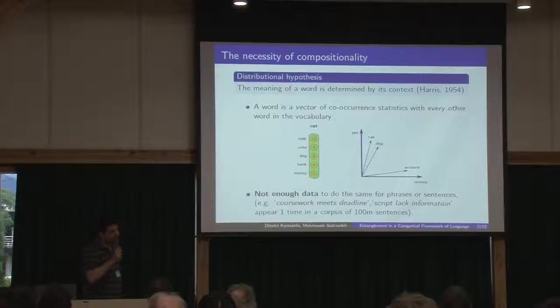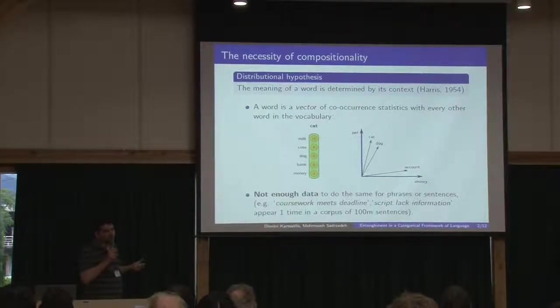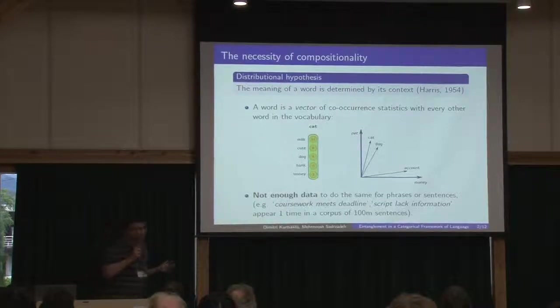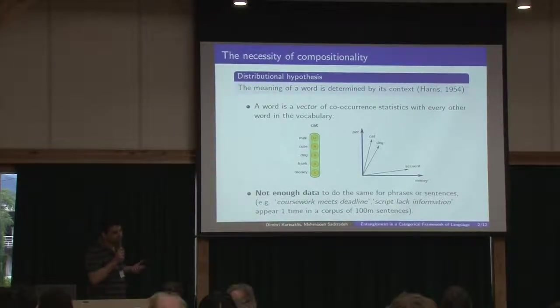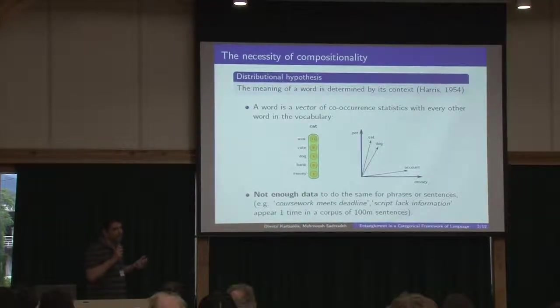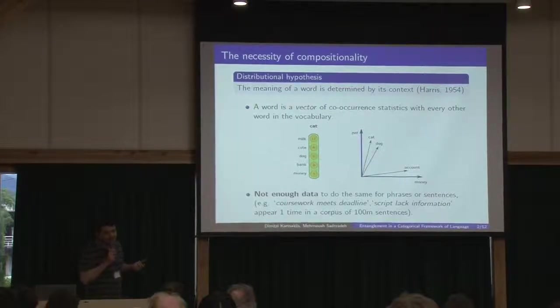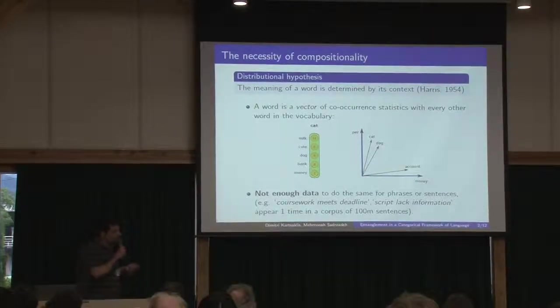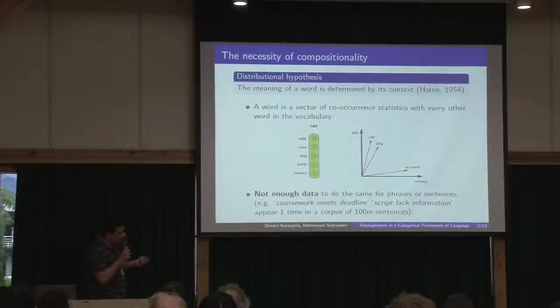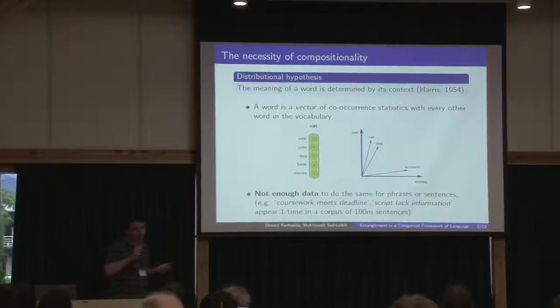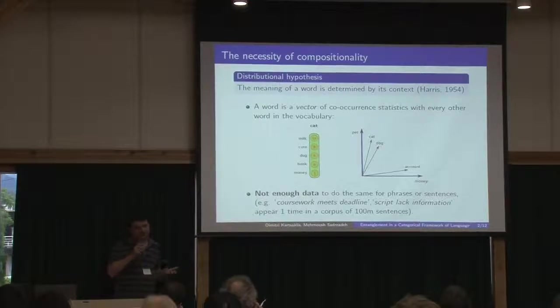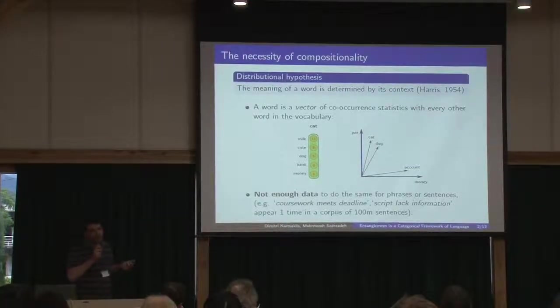And this has been proven very useful in natural language processing in many tasks. It would be really nice if we could extend this to phrases or even sentences. But unfortunately, the problem is that no matter how large is your corpus, it's not possible to collect reliable statistics for sentences. So you have to find another way to do this.